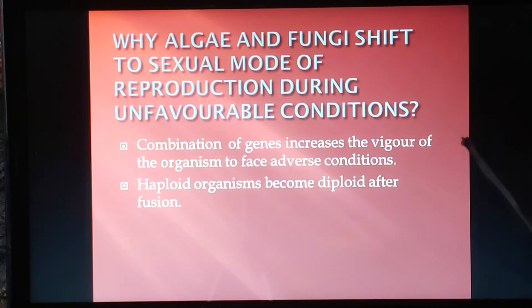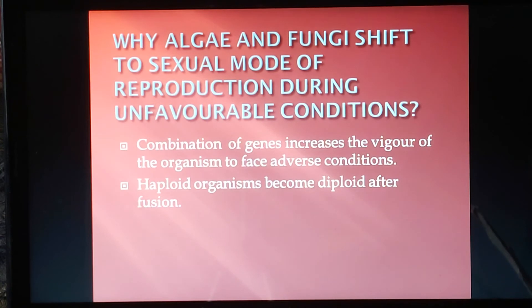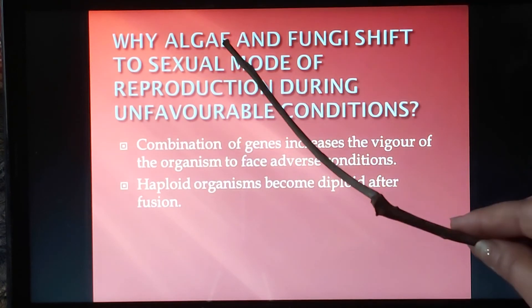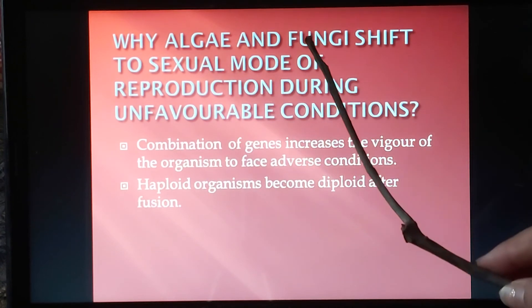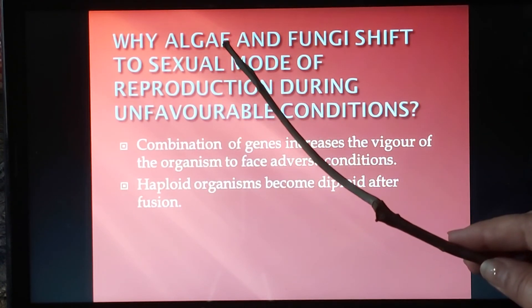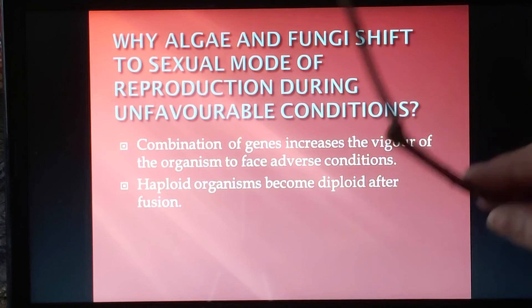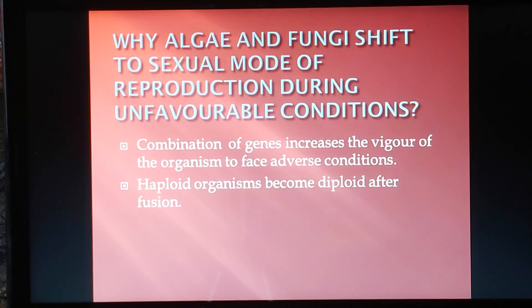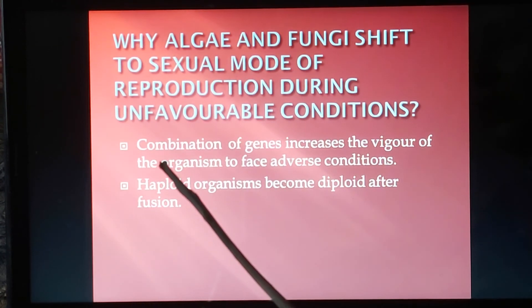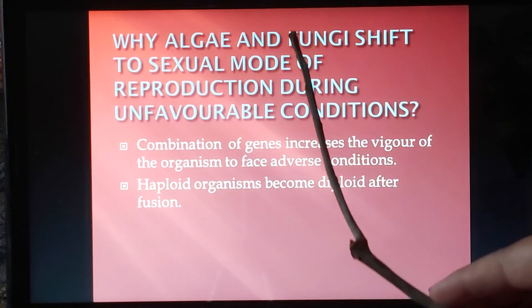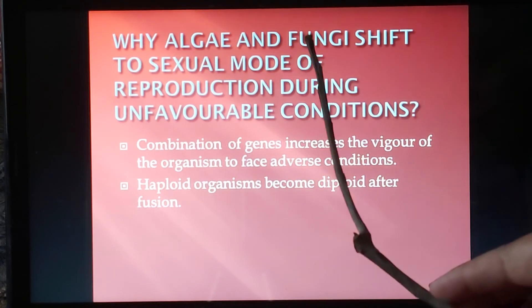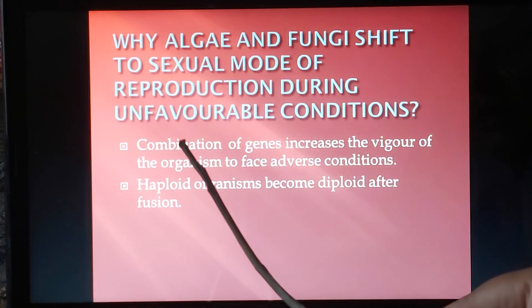Now, why do algae and fungi shift to sexual mode of reproduction during unfavorable conditions? These organisms normally reproduce asexually during the favorable period — they need water and humidity to multiply, so they reproduce rapidly during the rainy season. But they shift to sexual reproduction during unfavorable conditions, such as summer, when humidity and water content are low.